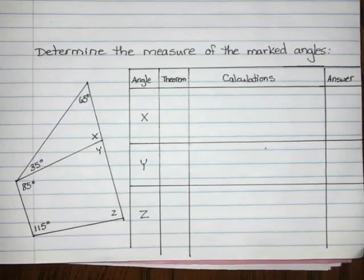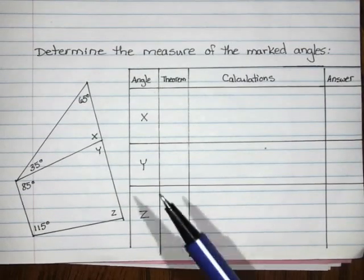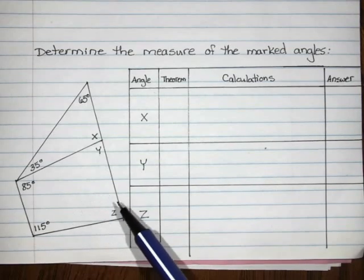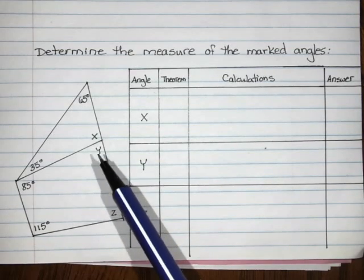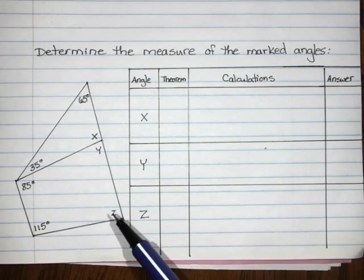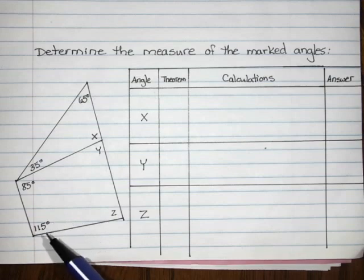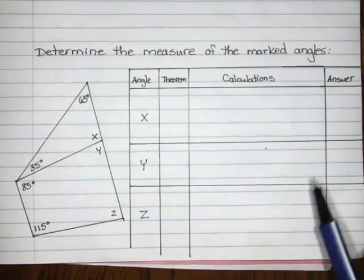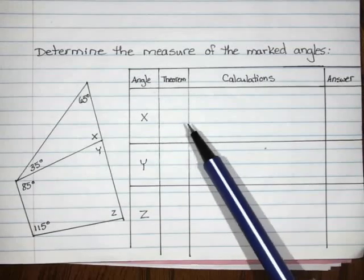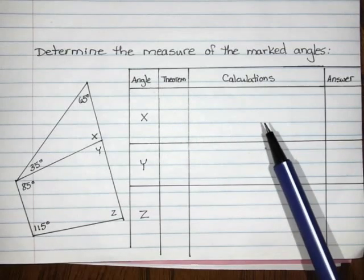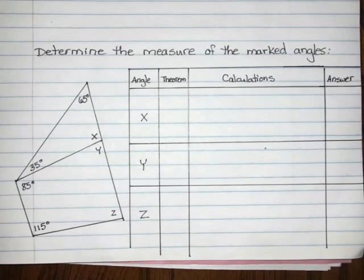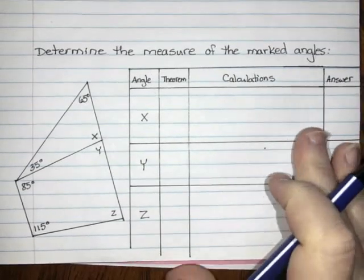The picture has three marked angles — x, y, and z — that we want to solve for, and four angles that are marked with known measures. We want to fill out our table by stating what theorem we're going to use, showing any calculations that are necessary, and then stating our final answer. When I look at this picture, there's a lot going on.